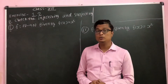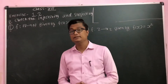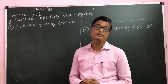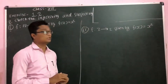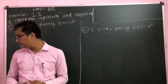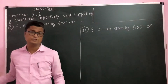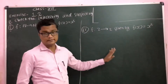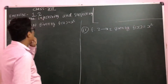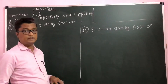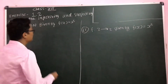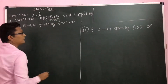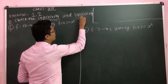Let's do problem number 2 of exercise 1.2, in which we are asked to check the injectivity and surjectivity of the function. Around 5 functions are given, so we are going to do the first one and the second one. Injectivity is nothing but a one-one function, and surjectivity is an onto function.